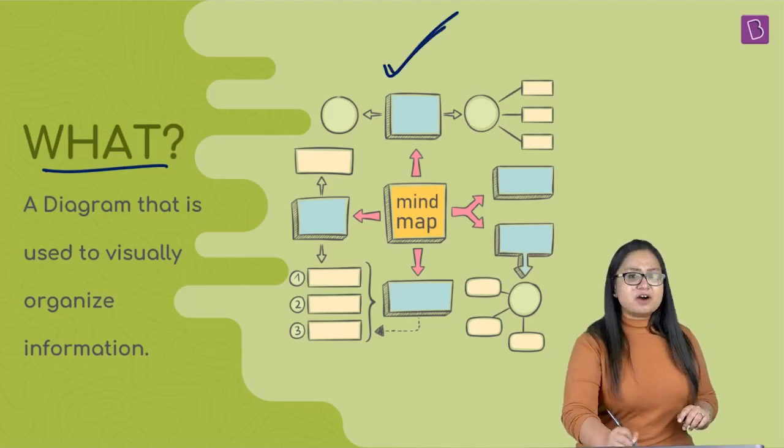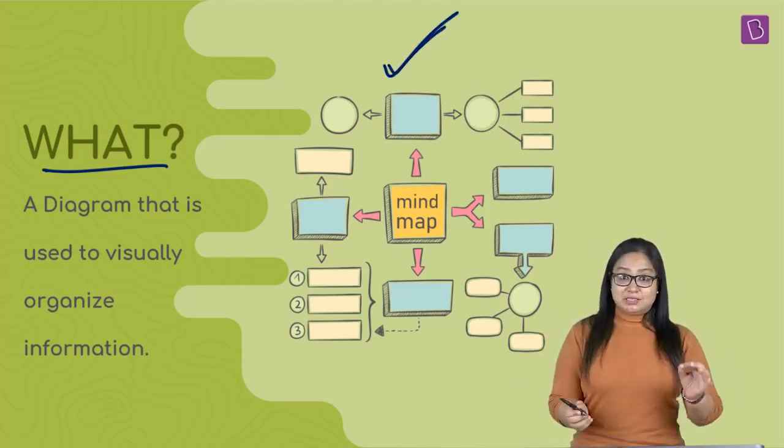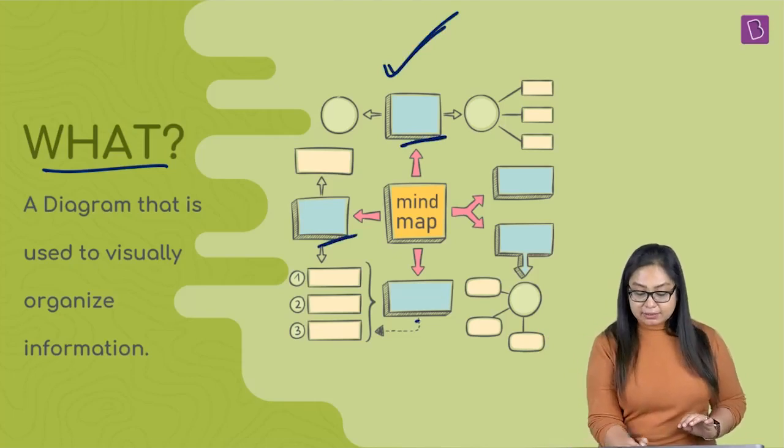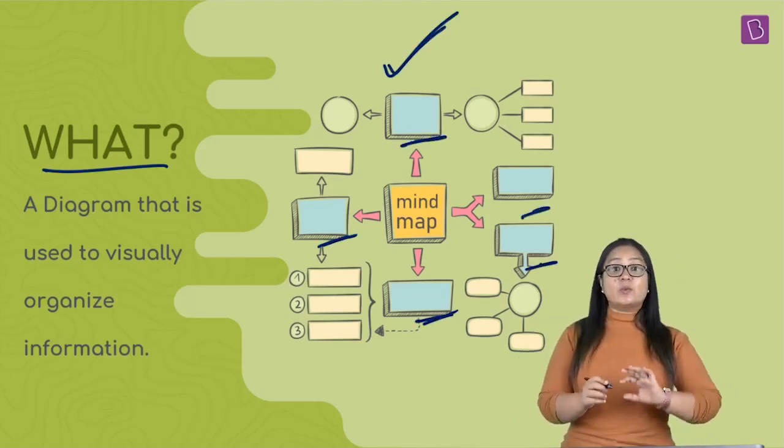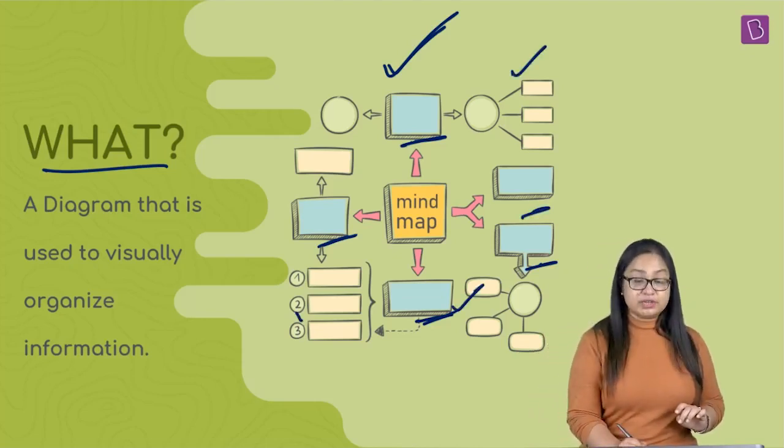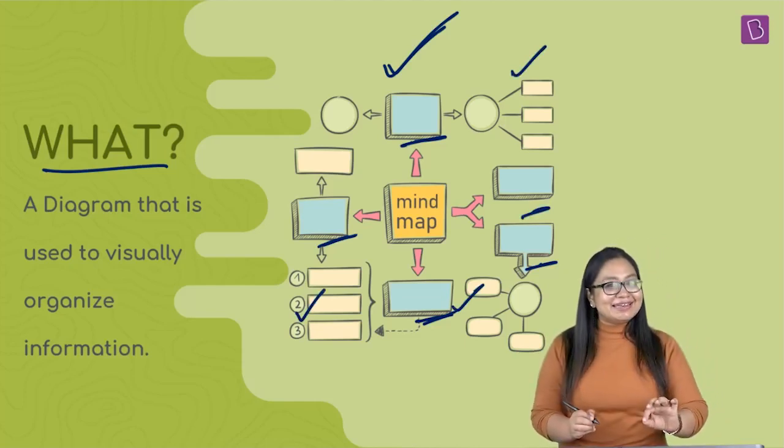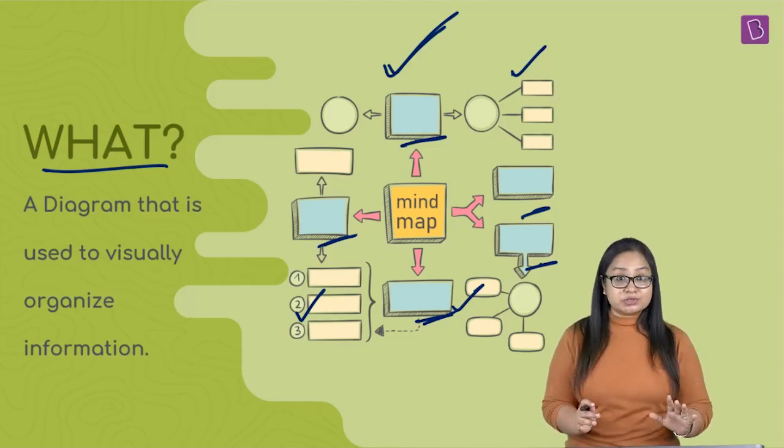You see, this is a perfect example of a mind map. You can see that these blue squares are the main concepts, right? And these squares are related with connectors to smaller subtopics. And then, the key points of that subtopic are connected with arrows.